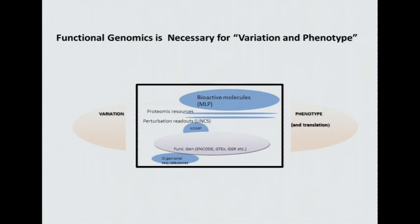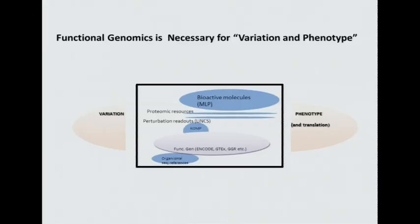It does make the point that we fund a lot of functional genomics, and it's stuck somewhere in this gap between variation and phenotype. But the problem is that while we all talk to each other, the information from these studies — and from other studies that others fund — is not integrated. We don't have a good handle on what's a useful way to integrate it, or what data are more useful than other data for biological and translational interpretation.